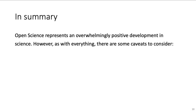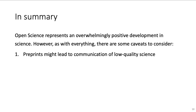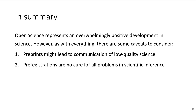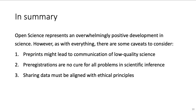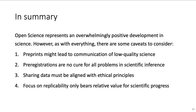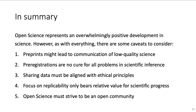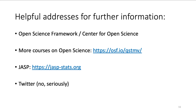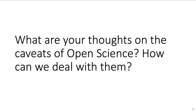In summary, open science is a great development in research. However, as with everything, there are some caveats to consider. Preprints accelerate scientific communication but might also circulate low-quality output. Pre-registrations, while contributing to scientific transparency, are no magic cure for all problems in scientific inference. When sharing data, we must be careful to respect data protection and ethical standards. The replication crisis is a severe problem, but it might be dwarfed by a crisis of generalizability. Lastly, open science must also strive to be an open community. If you look for further information on open science, please consider the addresses shown on the screen. What are your thoughts on the caveats of open science? How can we deal with them? Do you have any further concerns which I did not mention in the video? Please let me know in the comments.